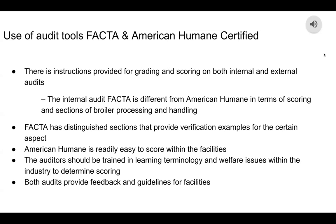Regarding the use of audit tools from both companies: instructions are provided for grading and scoring on both internal and external audits. Internal audit for FACTA is different from American Humane in terms of scoring and sections of broiler processing and handling. FACTA has distinguished sections that provide verification examples for certain aspects. American Humane is readily easy to score within the facilities. Auditors should be trained in learning terminology and welfare issues within the industry to determine scoring. Both audits provide feedback and guidelines for the facilities and have very similar grading systems.